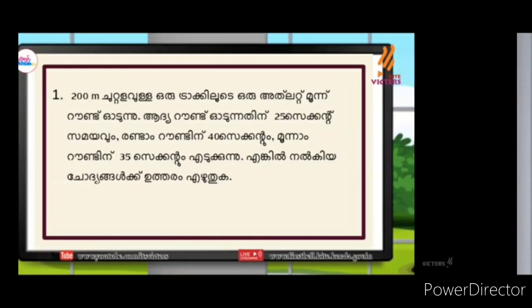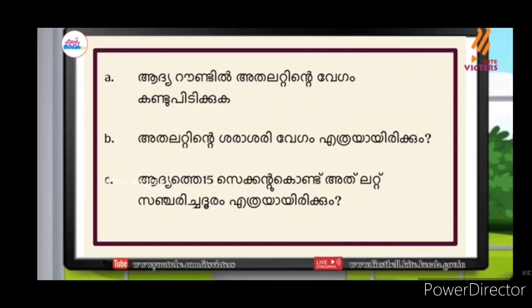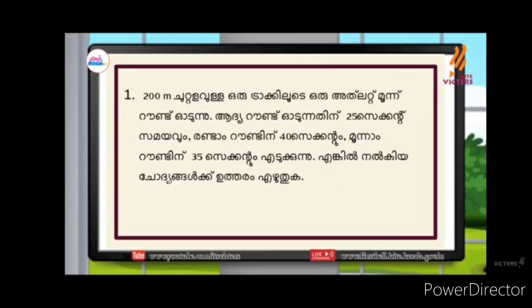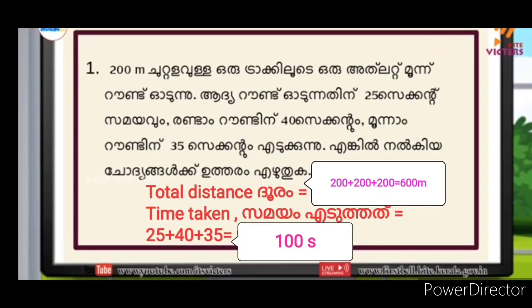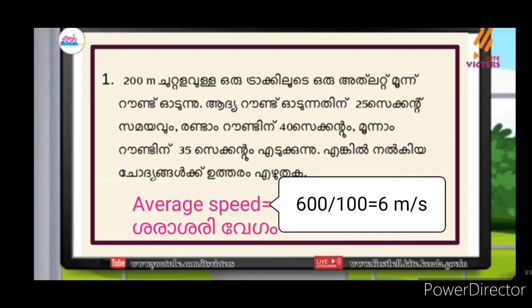What is the average speed of an athlete? The average speed of an athlete equals total distance traveled by total time taken. The average speed of an athlete is divided by time, which is equal to 60.